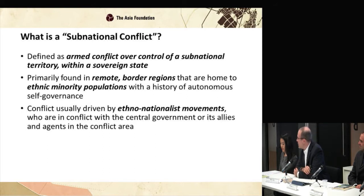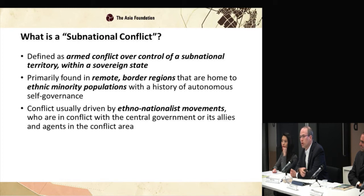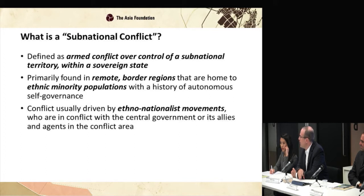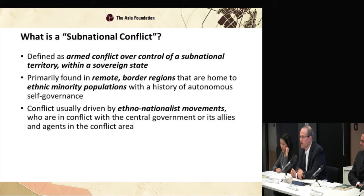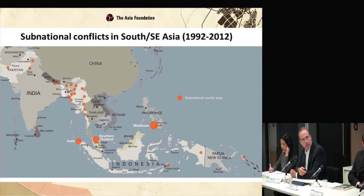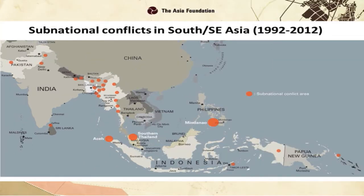What we mean by subnational conflict is simply armed conflict over control of a subnational territory within a sovereign state. These are primarily ethno-nationalist conflicts, usually in remote border regions. We found 26 of these over the last 20 years in South and Southeast Asia. All 26 are either on an international boundary or on a maritime border. They're almost always home to ethnic minority populations with a long history of autonomous self-governance, and the insurgent groups involved are driven by identity or ethno-nationalist political objectives. We selected the conflicts based on our definition matched to three datasets: the Uppsala armed conflict dataset, the Heidelberg Conflict Barometer, and the Minorities at Risk.